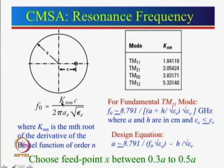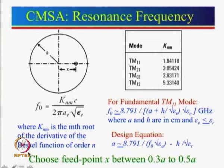There is one new term compared to the rectangular microstrip antenna, which is KNM. KNM is the mth root of the derivative of the Bessel function of order n. These Bessel functions come into account because a rectangular patch is defined by length L and width W, and along the length the variation was sinusoidal.